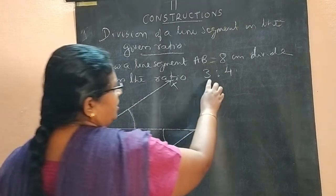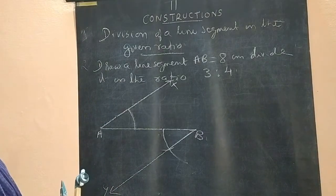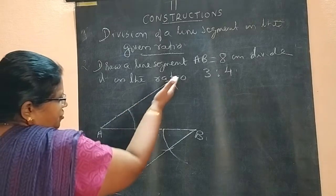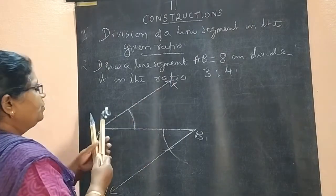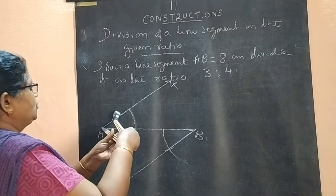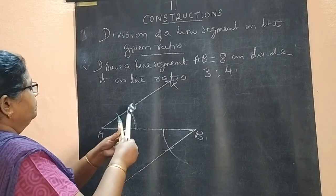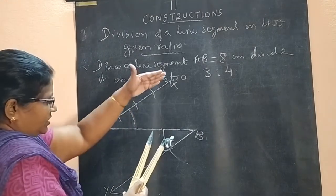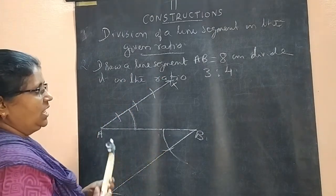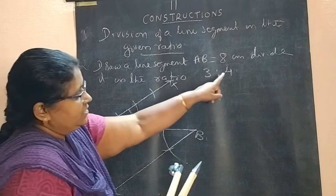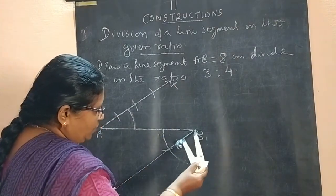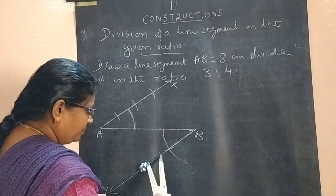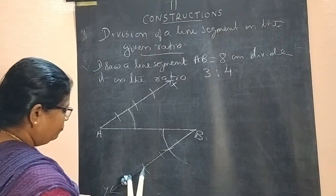Now, here the ratio is 3 is to 4. So first ray you make 3 equal parts. This is 1, 2, 3. First ray make into 3 equal parts. And next ratio 4, so this one you make into 4 equal parts: 2, 3, 4.